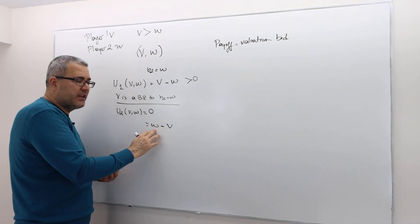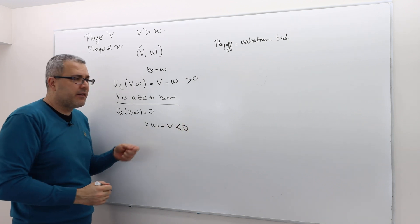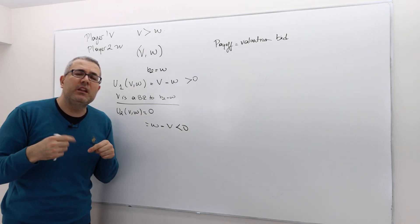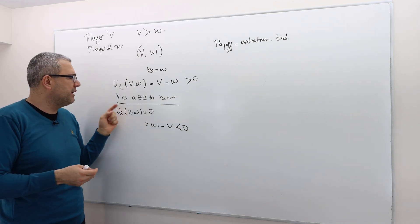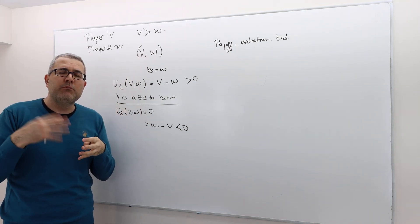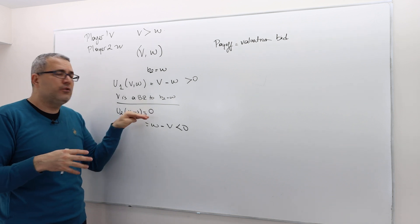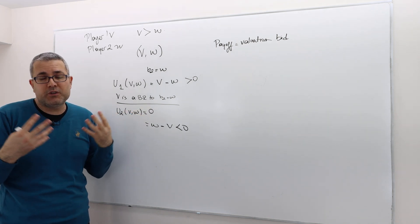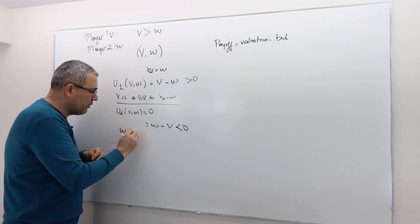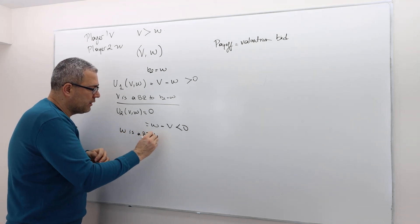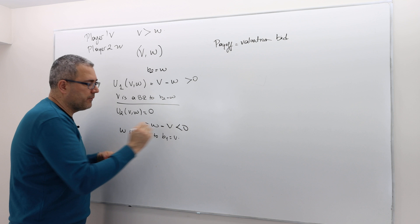That means winning the auction under this scenario where your opponent already bid V is not going to improve your payoff. So, you should be happy with zero. So, you shouldn't regret about your strategy. Meaning, W is also a best response to player one bidding V.